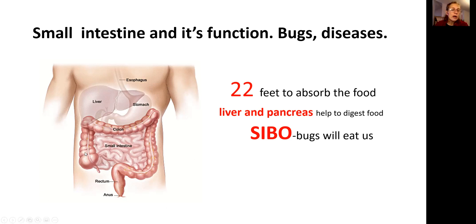The small intestine is also connected to the large intestine. The environment there is very different, and the bacteria in the large intestine are different. If you have constipation, everything backs up — pathogenic bacteria grows in the large intestine and will come back into the small intestine, creating damage.